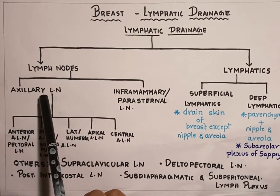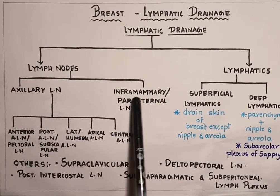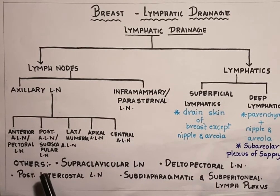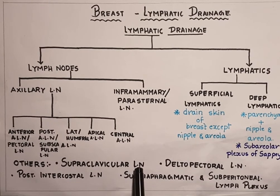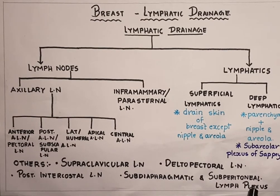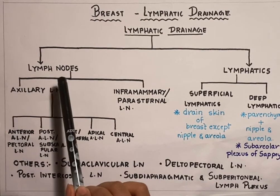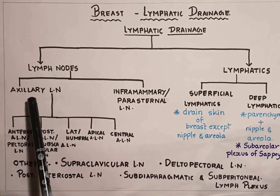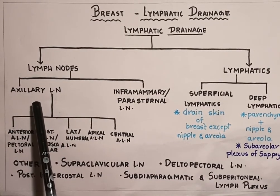The lymph nodes draining the breast include the axillary lymph nodes, the inframammary or parasternal lymph nodes, as well as other lymph nodes such as the supraclavicular lymph nodes, the deltopectoral lymph nodes, the posterior intercostal lymph nodes, and the subdiaphragmatic and subperitoneal lymph plexus.